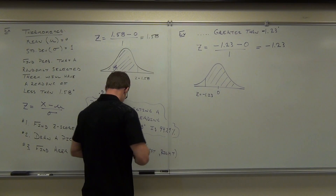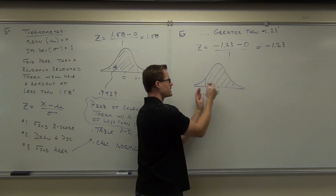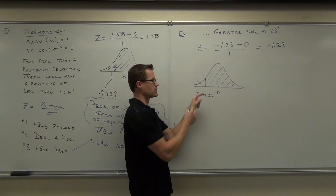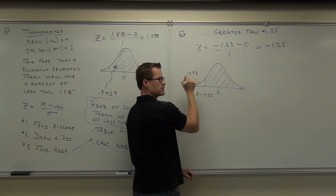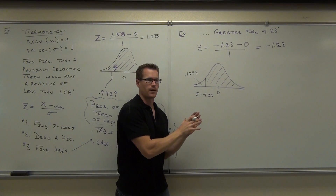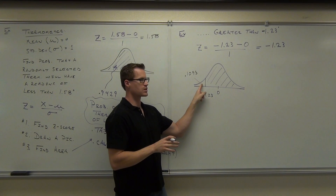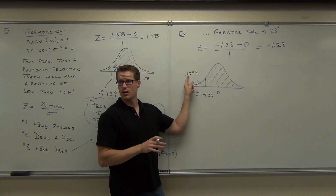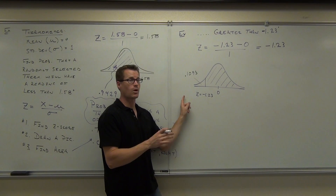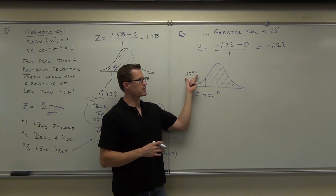So here's what this does. If I looked up negative 1.23 in my table A2, it's not going to give me this area — it's actually going to give you this area, which is why we draw a picture. How much did it give you? 0.1093. How many people were able to find that? You just have to be smarter for the problem now. We weren't actually looking for this area — we wanted stuff bigger than this number. So if this is your answer, that would be wrong. That would be finding the probability of selecting a thermometer that's less than negative 1.23. We want greater. So the question is, if I know this area is 0.1093, how can I find this area?